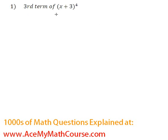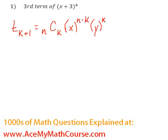Okay, now find the third term of the expansion of (x+3)^4. I will be using this formula: t_(k+1) = nCk * x^(n-k) * y^k. Don't worry, I will explain everything.